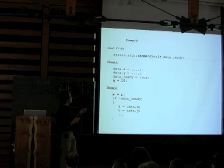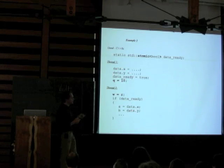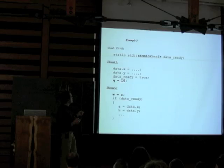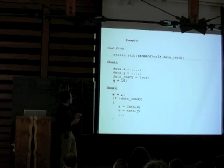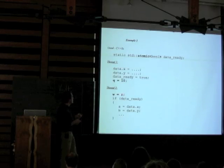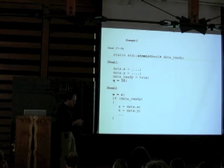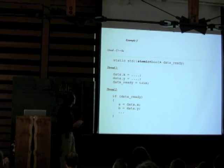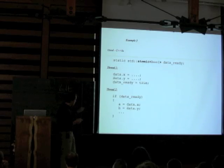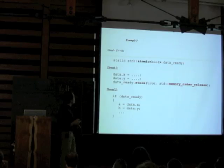With sequential consistency, code after the flag also doesn't get reordered with the data-ready operation — even if that other code has nothing to do with our data. What we'd really like is to allow the CPU to reorder irrelevant code, because it's not important. We want to loosen things up a bit. So we use memory_order_release, which says: all I really care about is the data and what happened before this point.